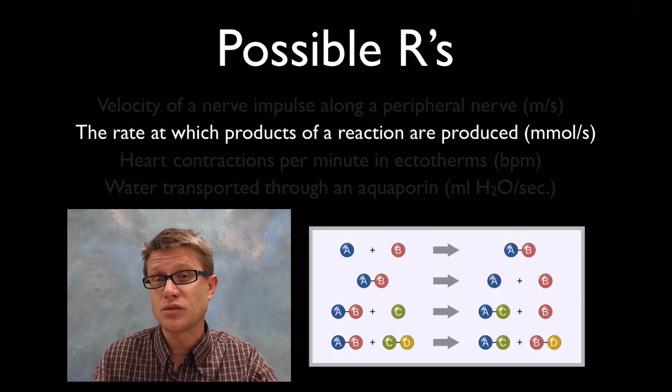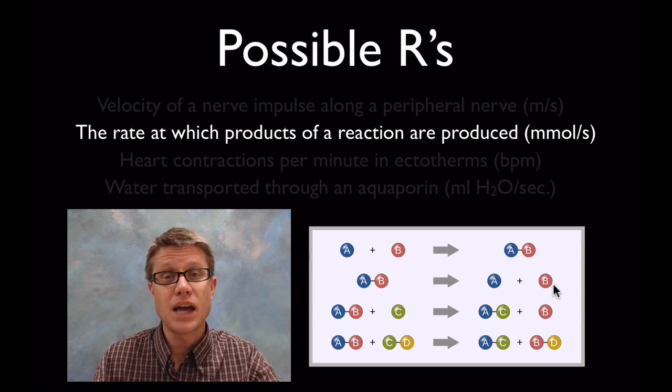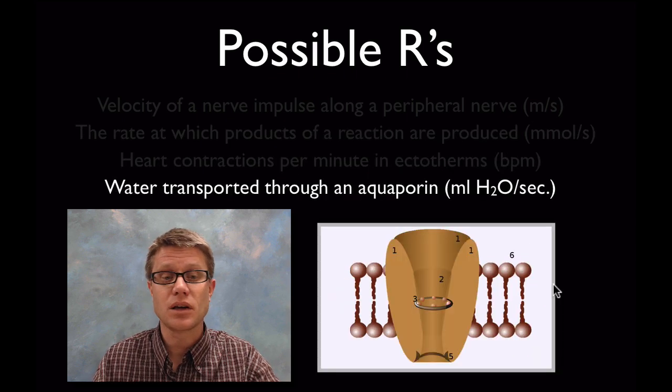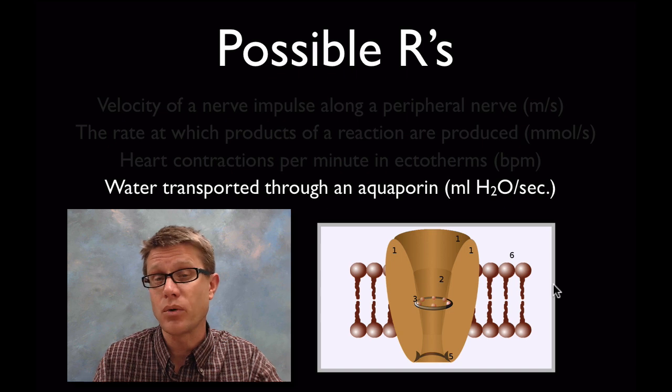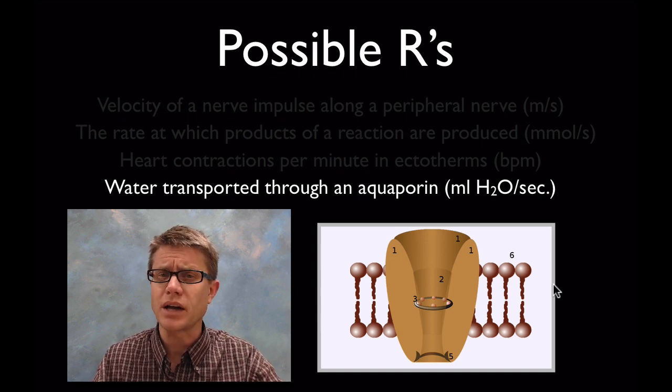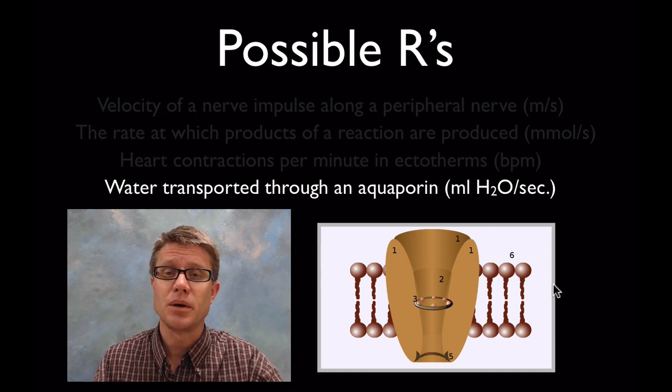Or we could look at products being produced in a reaction. And that could be our R. Or we could look at heart contractions in ectotherms. Or we could look at water transported through an aquaporin over time at different temperatures. And so it really doesn't matter what your reaction rate is. If we look at two temperatures we should be able to calculate Q10. And I hope that was helpful.